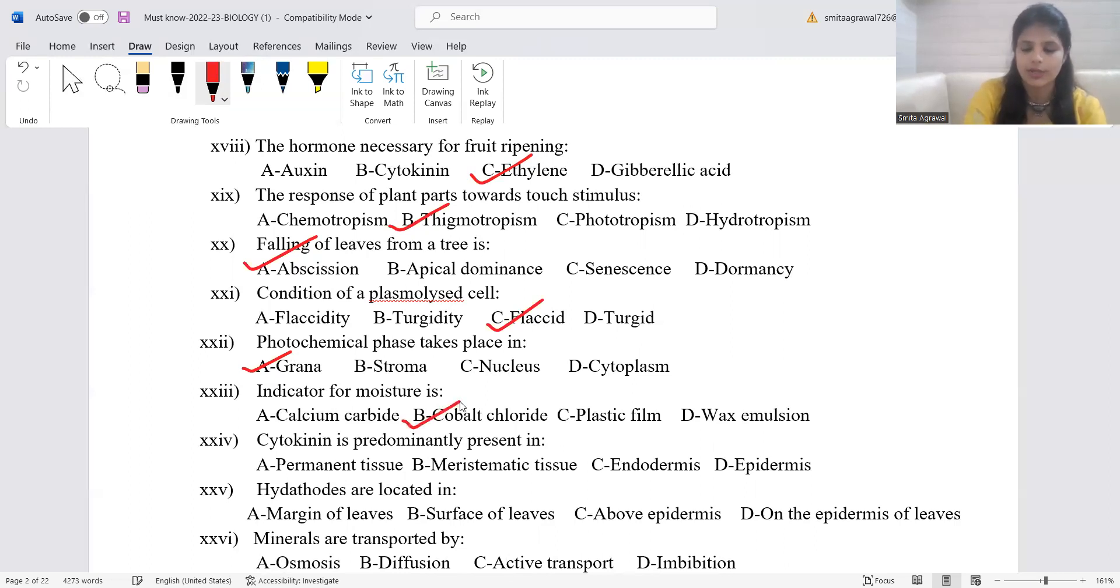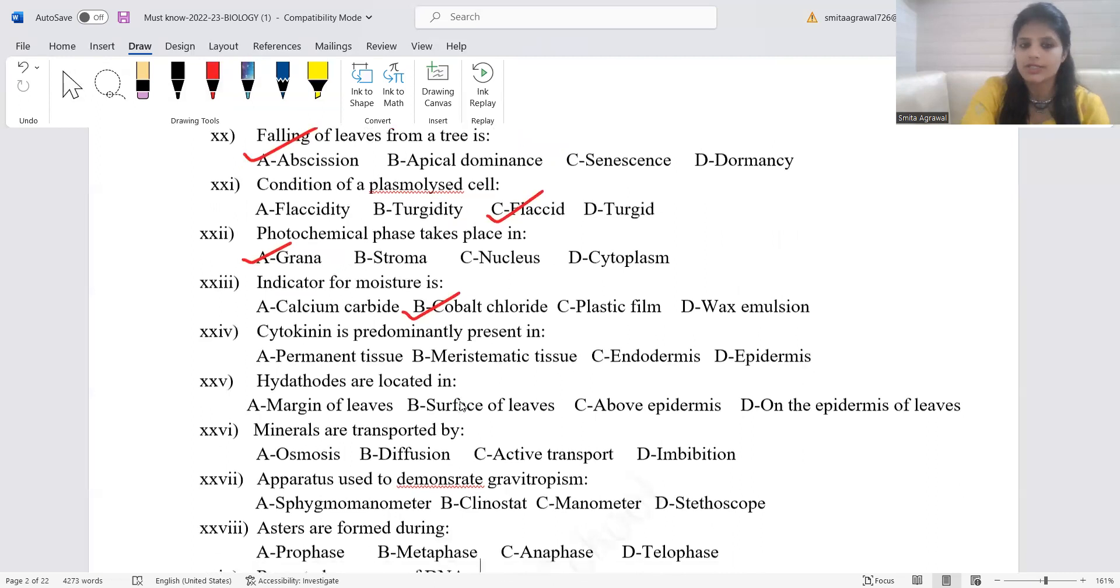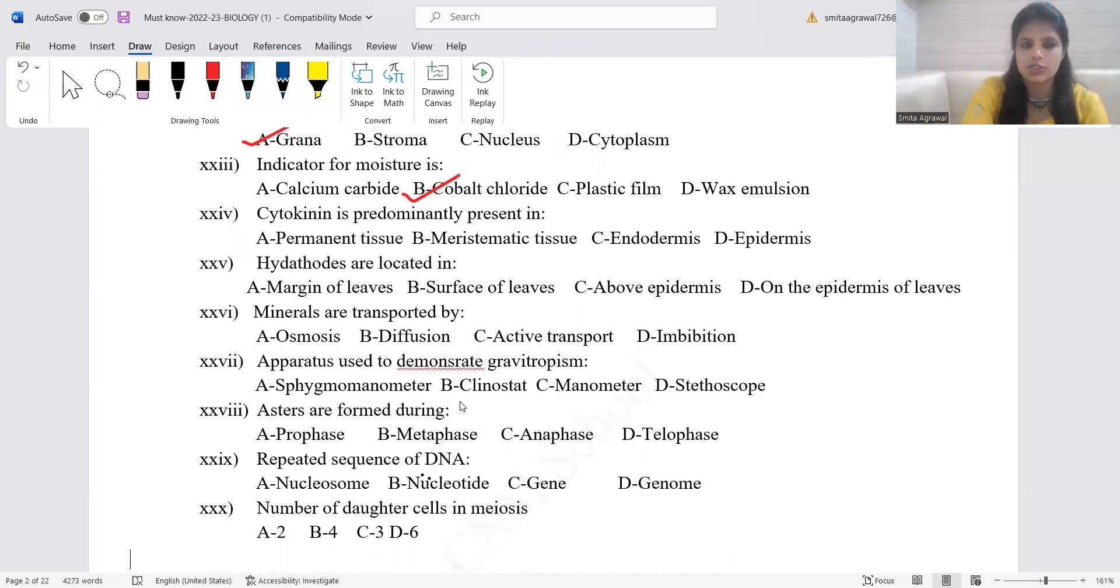Indicator for moisture is cobalt chloride paper. You use dry cobalt chloride paper to show that moisture or water vapors are released during transpiration. Cytokinin is predominantly present on meristematic tissue. C for cytokinin, C for cell division. That is possible at the meristematic tissue only. Hydathodes are located in margin of leaves. Minerals are transported by active transport. Water transport is by osmosis. Gaseous transport is by diffusion.